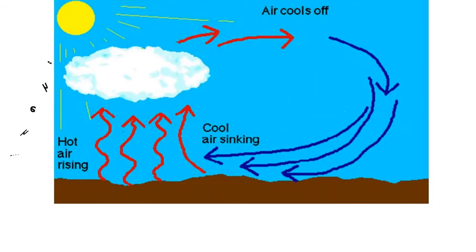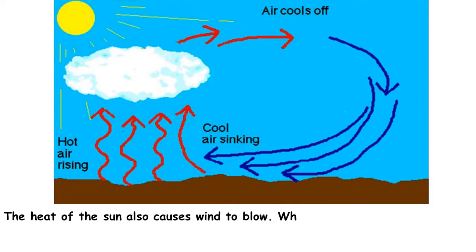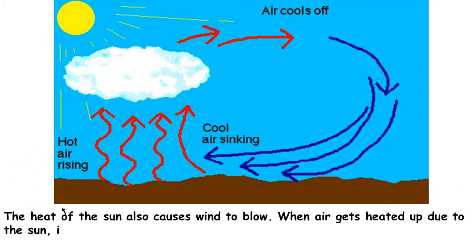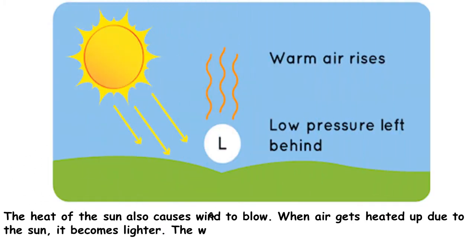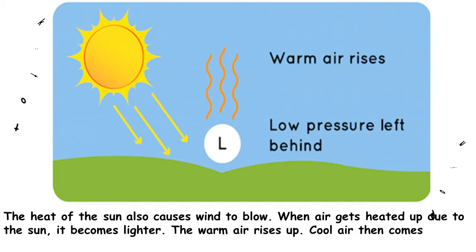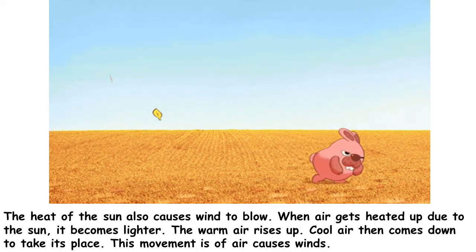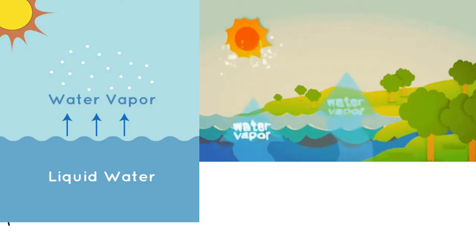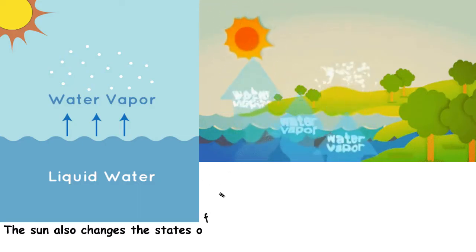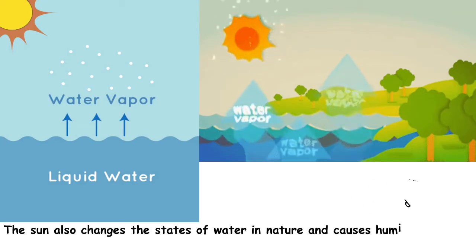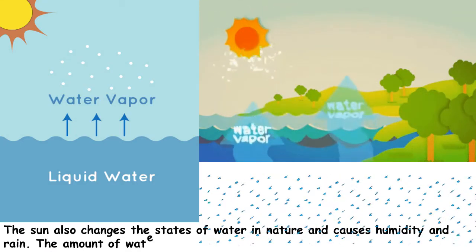The heat of the Sun also causes wind to blow. When air gets heated up due to the Sun, it becomes lighter. The warm air rises up, and cool air then comes down to take its place. This movement is what causes winds. The Sun also changes the states of water in nature and causes humidity and rain.